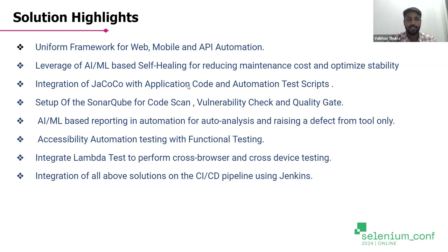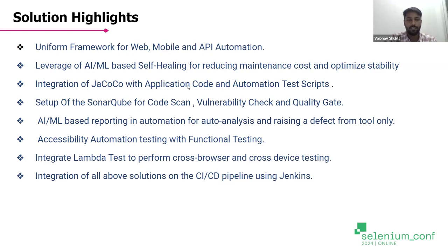Here we are using one tool from EPAM, that is Report Portal. It's again open source, and it has ML capabilities which reduce 90% manual effort and increase the ROI in terms of automation. The fifth point is accessibility — we can do accessibility automation testing alongside functional testing, apart from UI testing. We have integrated Axe, which is open source. And here we have integrated LambdaTest as well, to perform cross-browser and cross-device testing on real devices. All these solutions are integrated in a CI/CD pipeline using Jenkins.